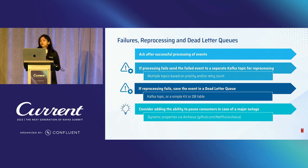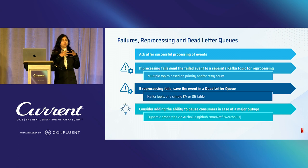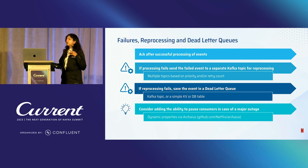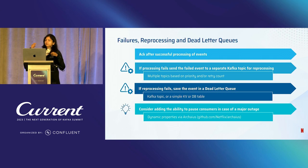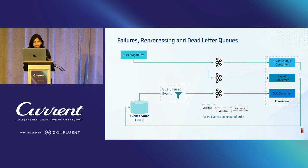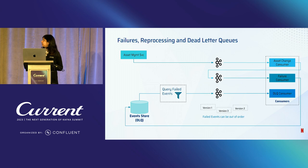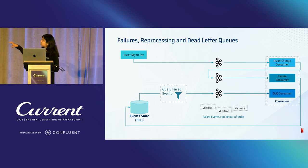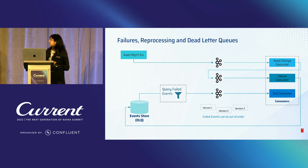We also have the ability to pause our consumers because we don't want cascading failures or additional impact when a downstream service is down — adding more retries only makes things worse. In case of failures, we publish all failed events to a different store, and whenever the service recovers, we consume those events again.